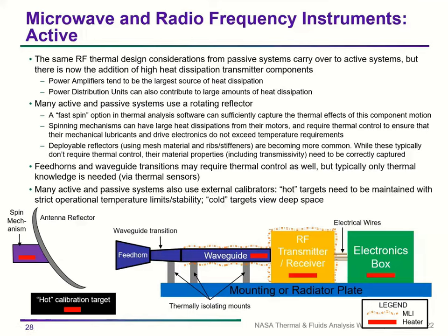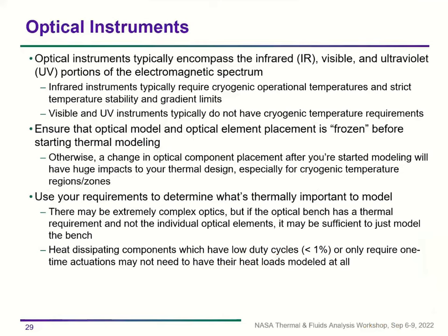Moving on to optical instruments: these typically encompass the IR, visible, and ultraviolet portions of the electromagnetic spectrum. Infrared instruments often require cryogenic operational temperatures with strict temperature stability and gradient requirements — for these instruments, you're often trying to measure heat emitted by a particular astronomical source...